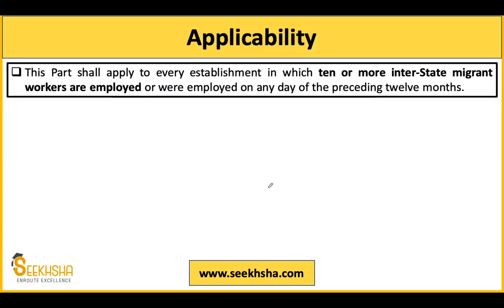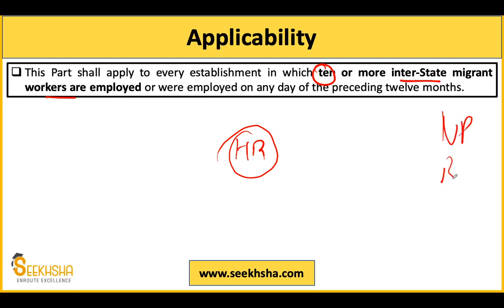Provisions related to migrant workers apply to establishments where 10 or more interstate migrant workers have been employed in the past 12 months. For example, if my company is in Haryana but more than 10 employees are from UP, Bihar, MP, Jharkhand, Chhattisgarh, Maharashtra, or any other state, then these provisions will be applicable to my organization.